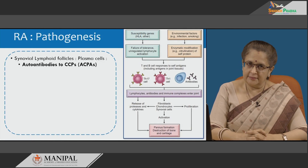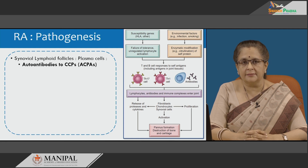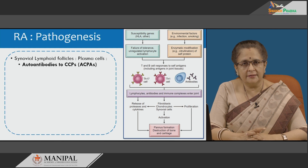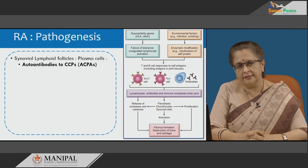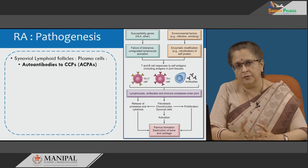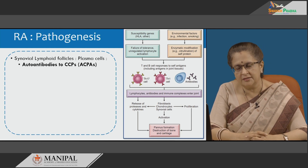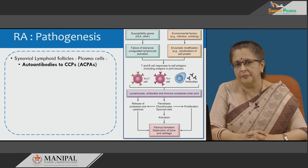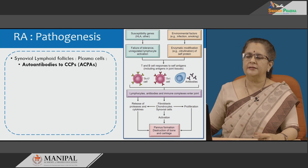Besides the T helper cell response, autoantibodies also play an important role in the morphological changes. Normally there are very few lymphocytes in the synovium, but in rheumatoid arthritis, due to activation of these lymphocytes, they form lymphoid follicles with germinal centers, which in turn progress to plasma cell formation. These plasma cells release autoantibodies, specifically anti-citrullinated peptide autoantibodies.